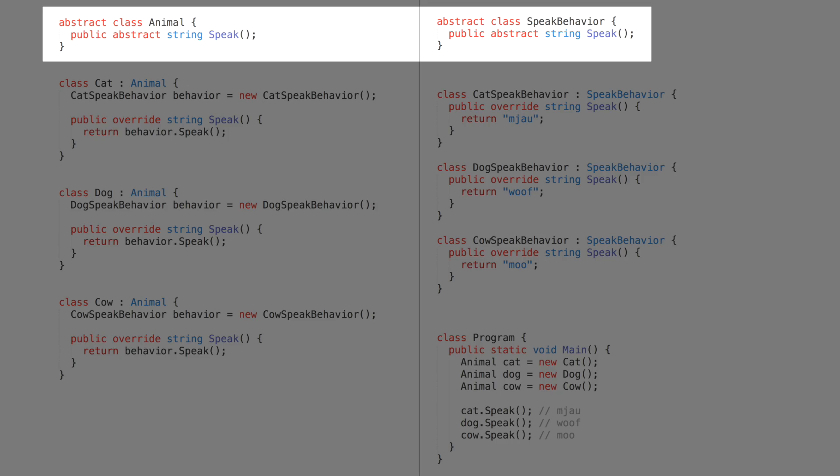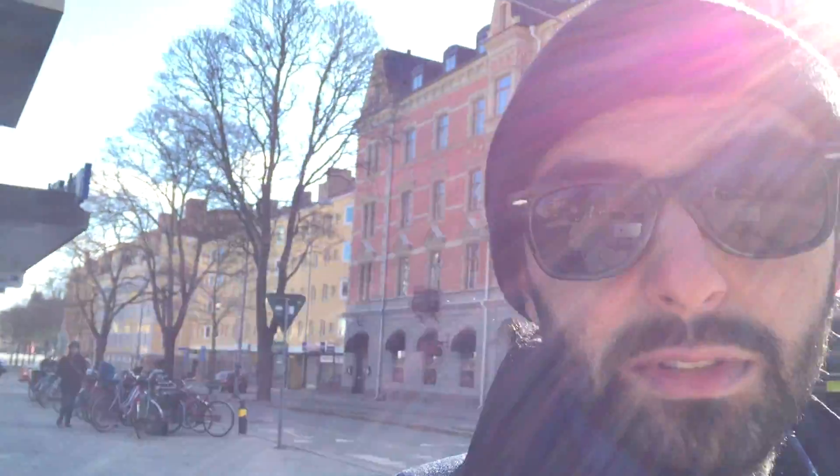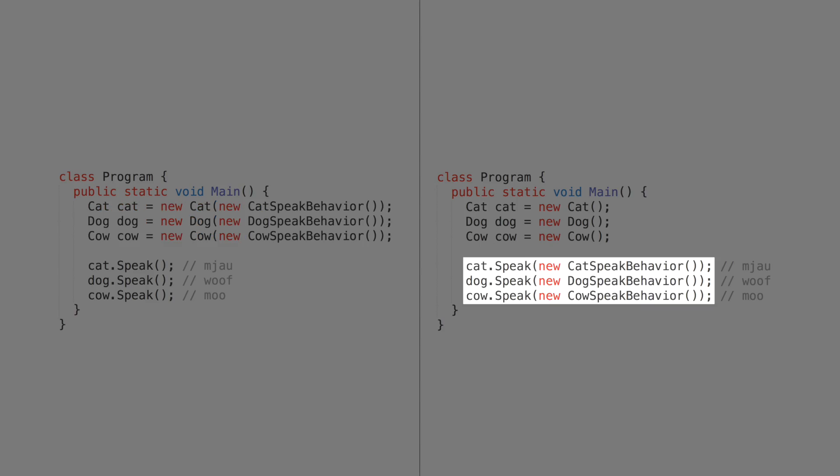The abstractions in this case are the parent classes — Animal for the animals hierarchy, and SpeakingBehavior for the speaking behaviors hierarchy — not the concrete implementations. Dependency inversion therefore states that animals should not be coupled to concrete types of speaking behavior but rather to the abstraction. The animal classes should not instantiate their own speaking behaviors; instead, they should receive a speaking behavior and call speak on it — delivered via constructor injection or parameter injection.